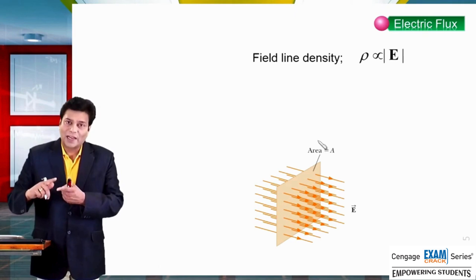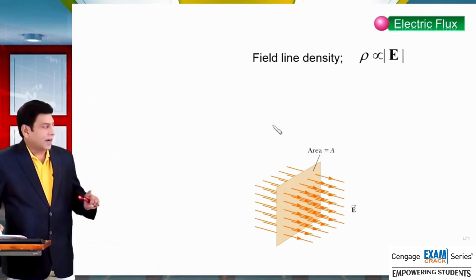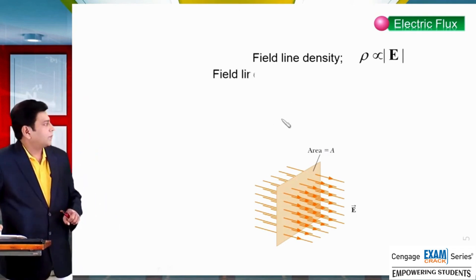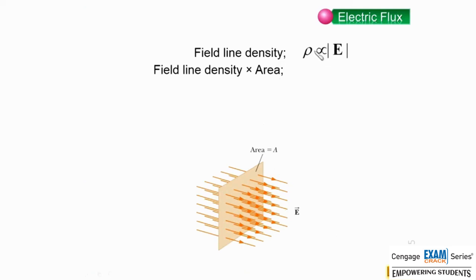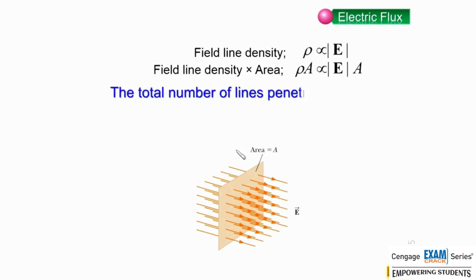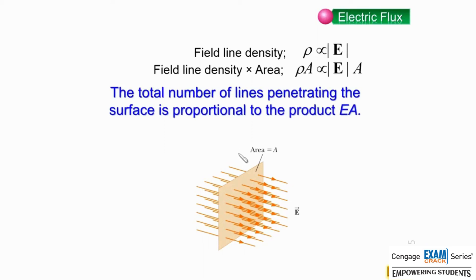Let us multiply the electric field line density by the area of the surface. This area is capital A. So this equation becomes rho multiplied by A is proportional to E multiplied by A. Here rho is equal to the number of electric field lines, so the total number of field lines penetrating the surface is proportional to the product E multiplied by A. This product of the magnitude of electric field E and surface area A, which is perpendicular to the electric field, is called the electric flux. We call E multiplied by A the electric flux.